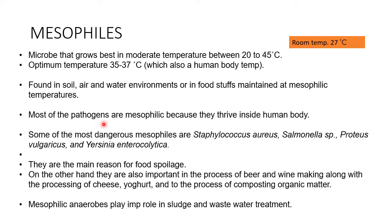Most pathogens are mesophilic because they thrive inside human bodies. Some of the most dangerous mesophiles are Staphylococcus aureus, Salmonella species, Proteus vulgaris, and Yersinia enterocolitica. They are a main reason for food spoilage. On the other hand, they are also important in beer and wine making, along with cheese, yogurt production, and composting organic matter.